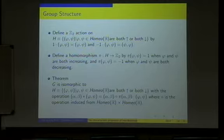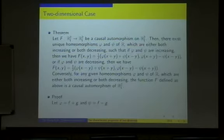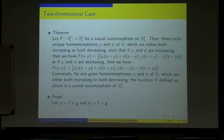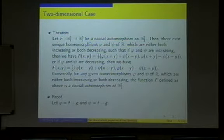This is the Z_2 action defined here, and this is the group operation induced from the product group. I think it is very interesting that each component of a causal automorphism satisfies the wave equation. In the high-dimensional case, because the solution is affine linear, it gives a trivial solution of the wave equation. But in the two-dimensional case, the solution gives a non-trivial solution of the wave equation.